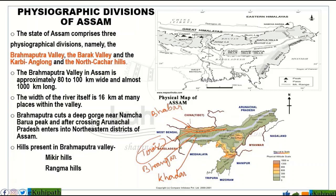The river flows through a flat plain. The river carries sediment, and this sediment is deposited. The sediment forms areas where water is present, creating distinct depositional landforms.